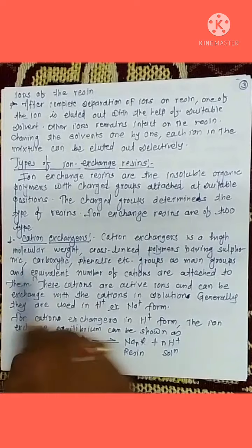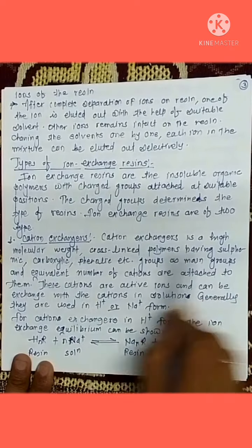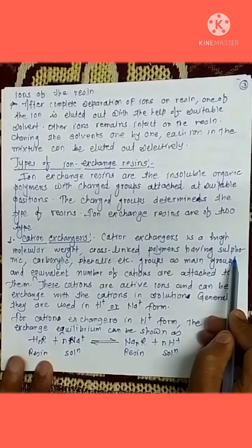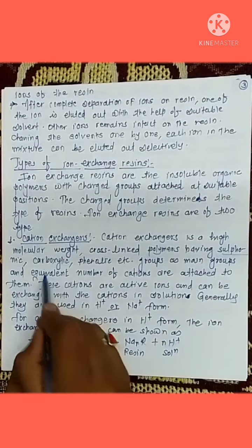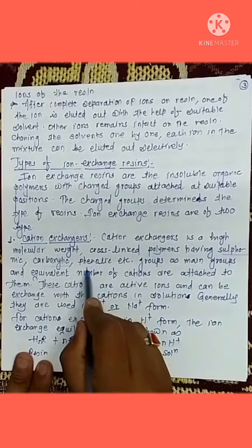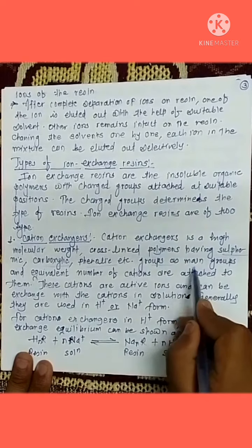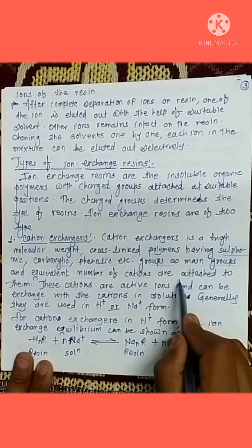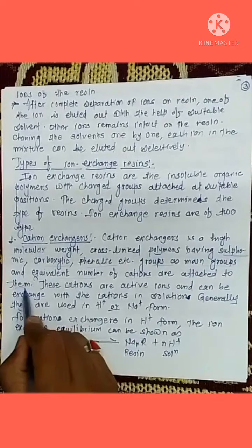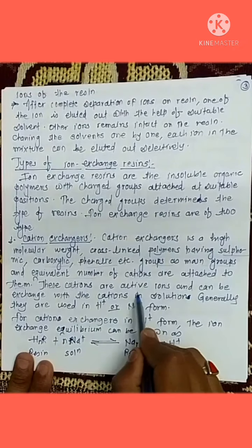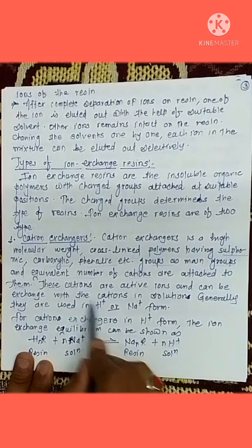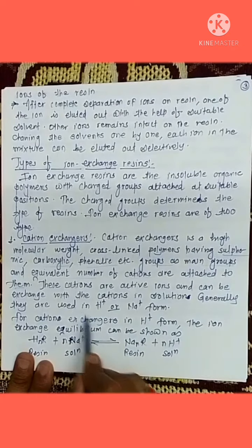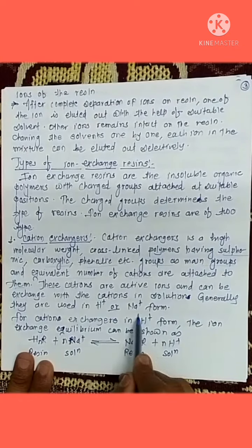The first type is the cation exchanger. Cation exchangers are high molecular weight cross-linked polymers having sulfonic, carboxylic, phenolic, etc. groups as the main group, and an equivalent number of cations are attached to them. These cations are active ions and can be exchanged with cations in the solution. Generally, they are used in H+ or Na+ form.